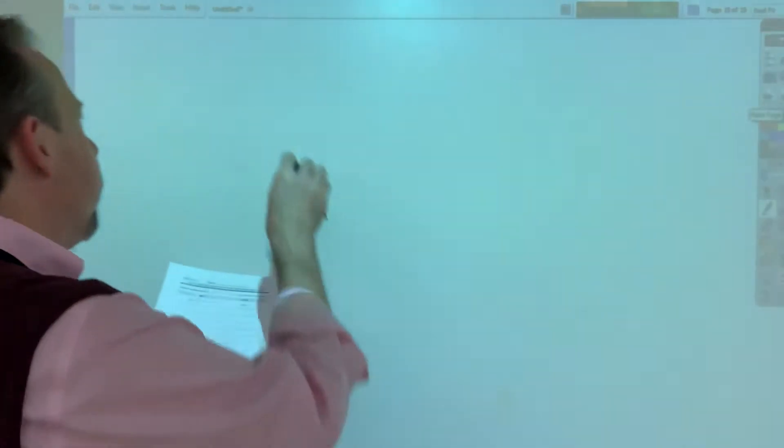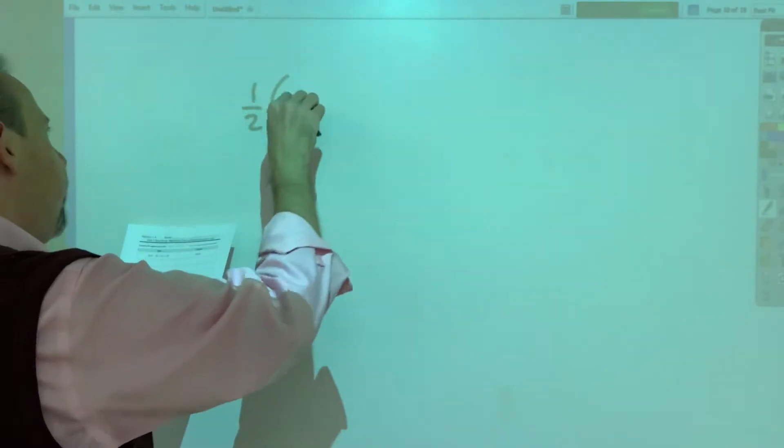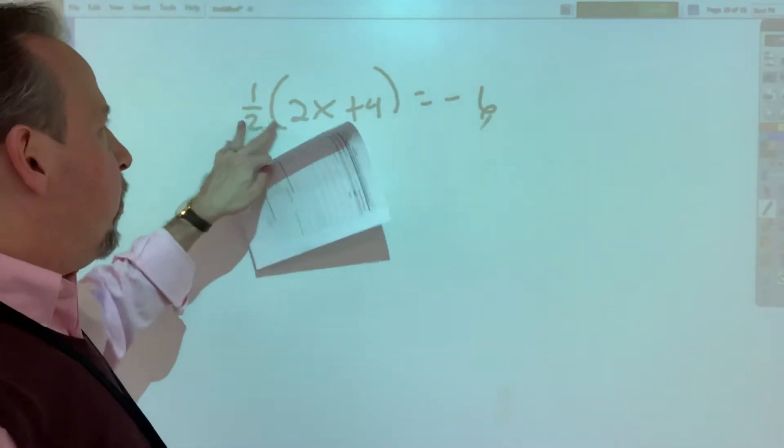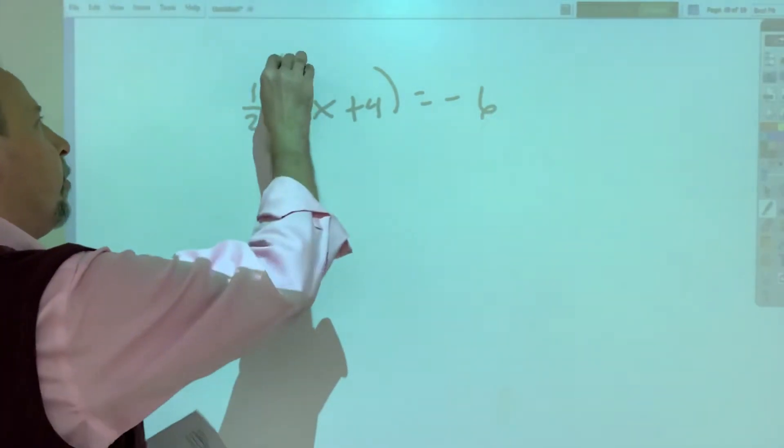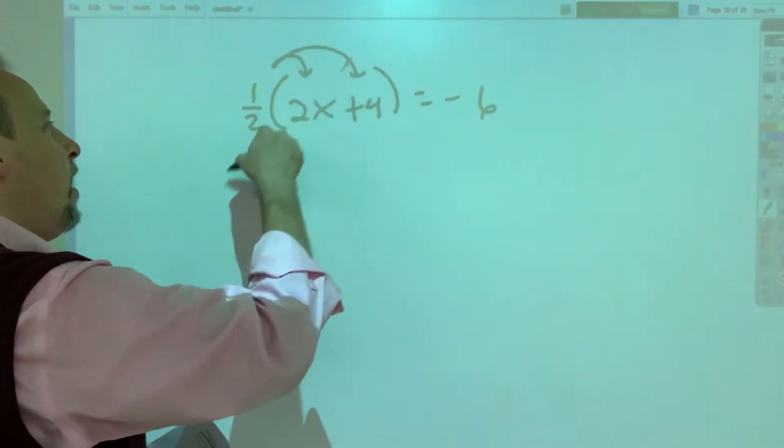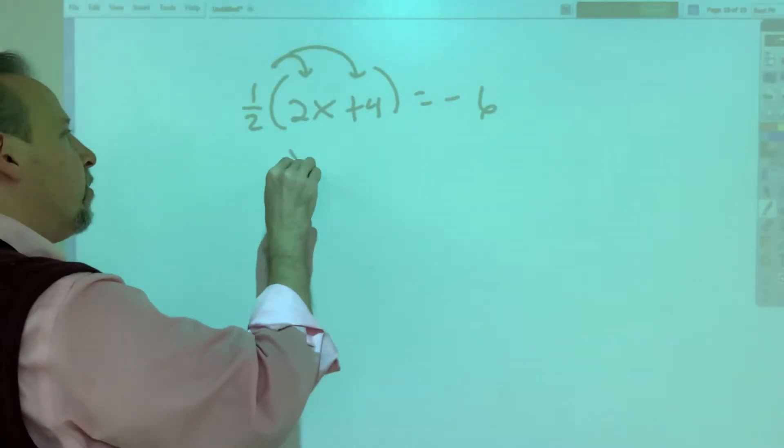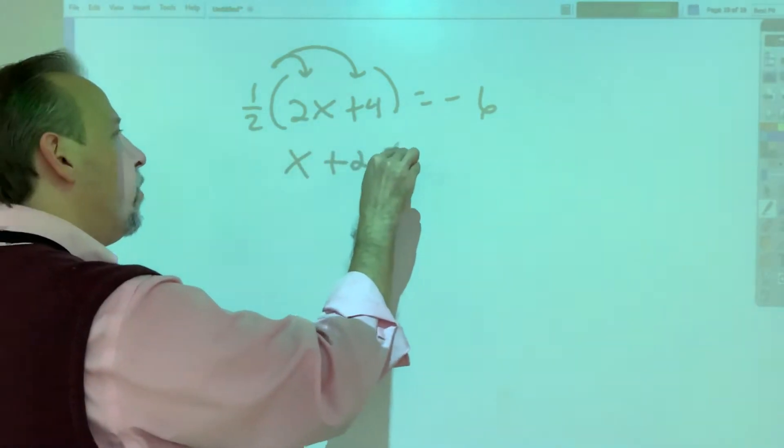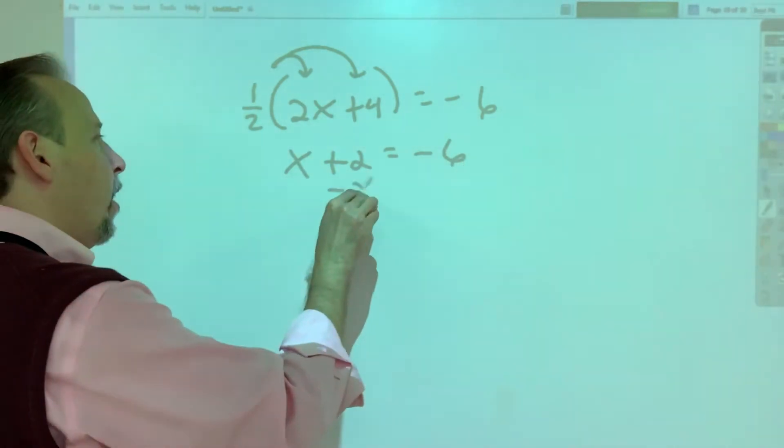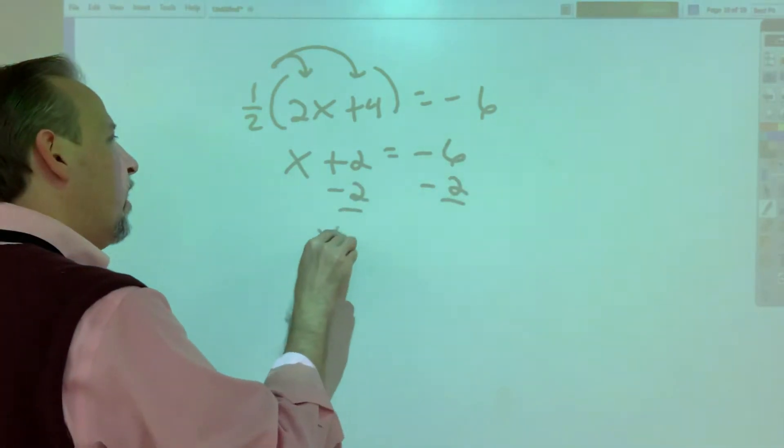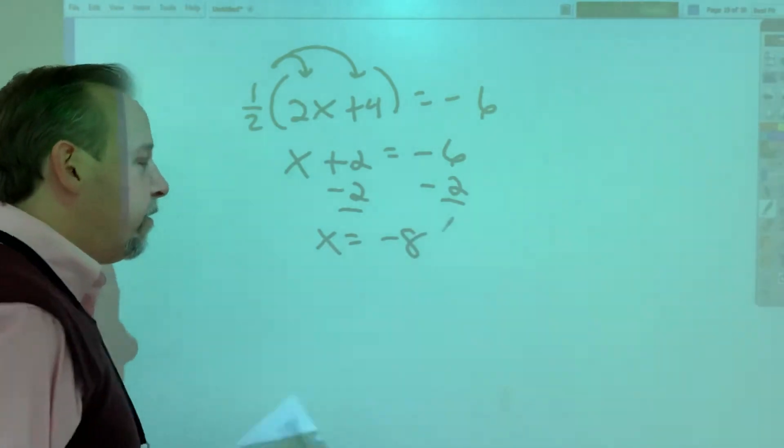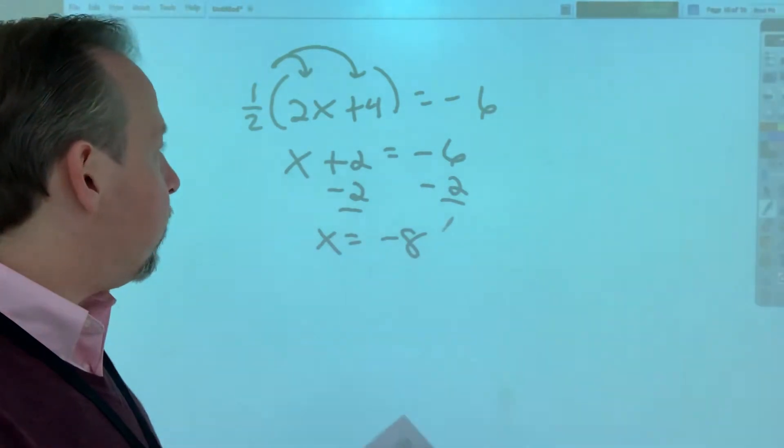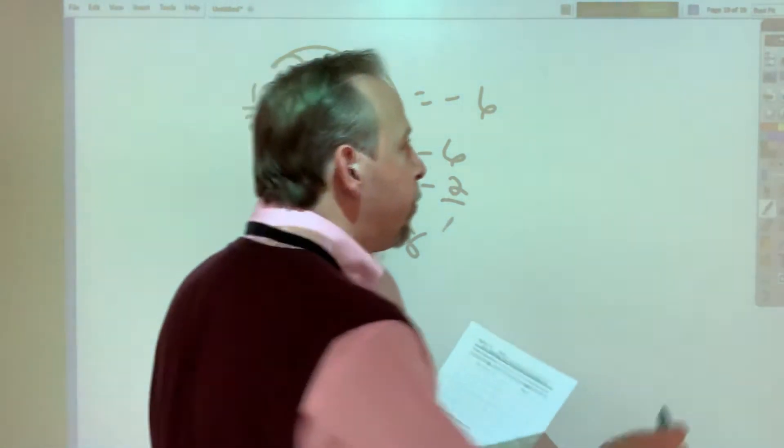Moving on. It said solve and show your work. We have 1 half parentheses 2x plus 4 equals negative 6. We could distribute that 1 half without too much trouble. 1 half times 2x is 1x, or just x. 1 half times 4 is 2, so it's plus 2 equals negative 6. I'm going to subtract 2 from both sides and I get x equals negative 8.